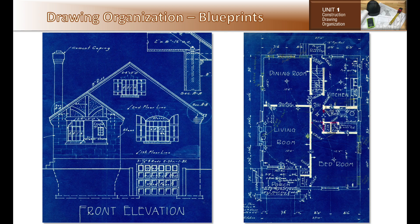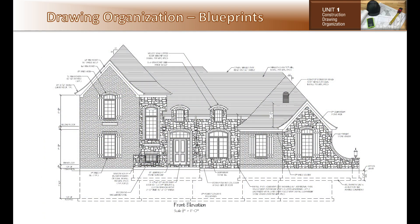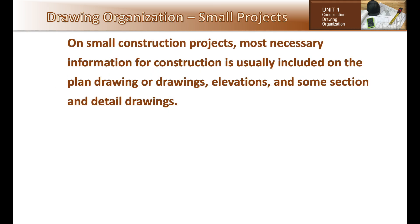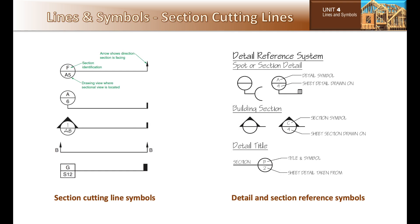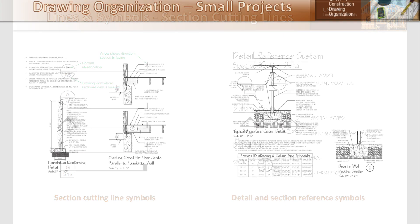A print is a copy of a drawing, and for many years we called this a blueprint. Blueprints consist of white lines on a blue background. Today, prints have dark lines on a white background and are printed out using a large format printer. On small construction projects, most necessary information is usually included on the plan drawing or drawings, elevations, and some section and detail drawings.